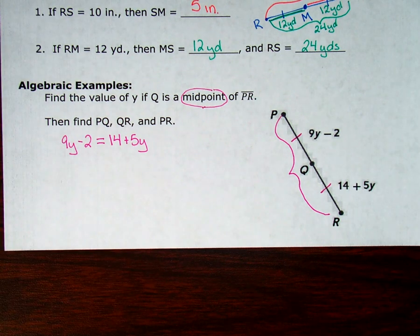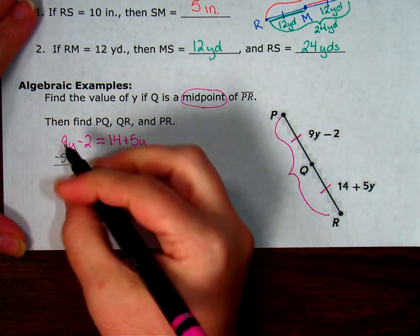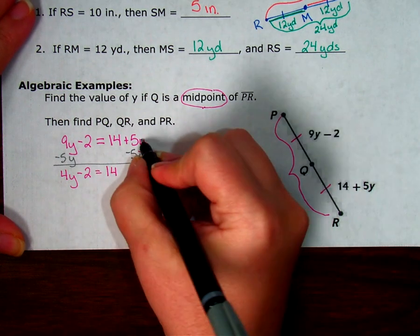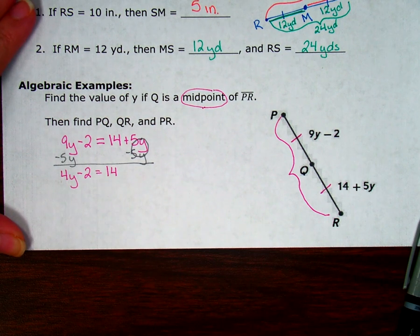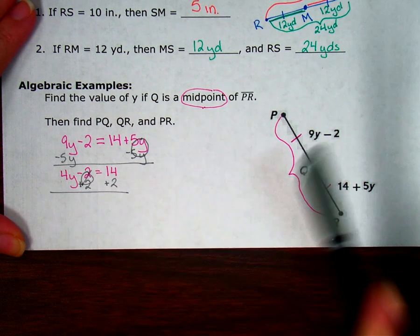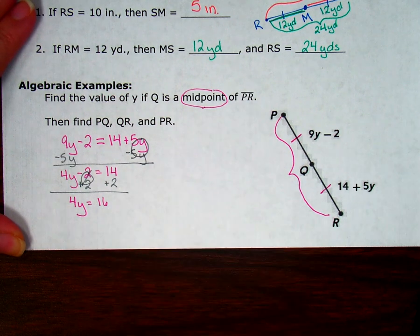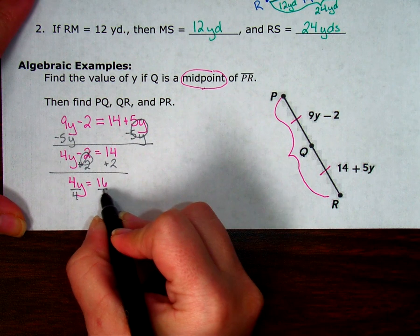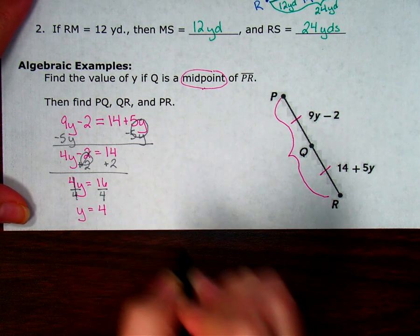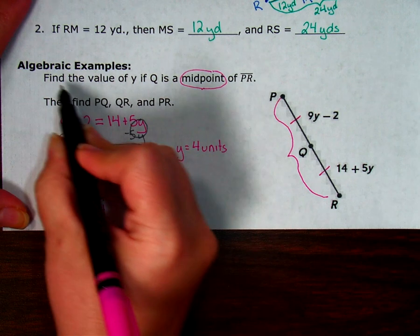So now we just need to solve this for y. So the first thing I'm going to do is get all my y's on the same side by moving the smaller one. So I'm going to subtract 5y on both sides so that I end up with 4y minus 2 equals 14. Then I'm going to add my 2 to both sides to get the 4y by itself. When I do that, 4y equals 14 plus 2 is 16. Divide both sides by 4, division property of equality. So 4 over 4 is 1y equals 16 over 4 is 4. So I know that y equals 4 some kind of units.